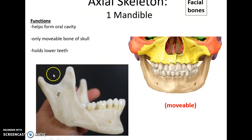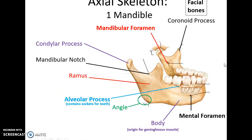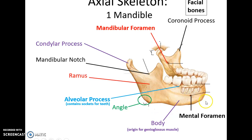The mandible helps form the oral cavity, is the only movable bone of the skull, and holds the lower teeth. It has many associated structures including the condylar process that helps form the temporomandibular joint, the mandibular notch, and the coronoid process. On the inside is the mandibular foramen for nerves. The vertical portion is called the ramus; where the ramus joins the body of the mandible there is an angle. Within the body there is a hole on either side called the mental foramen, and the tissue holding the lower teeth is the alveolar process.